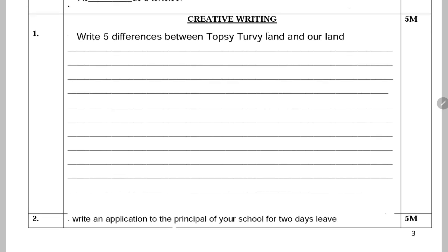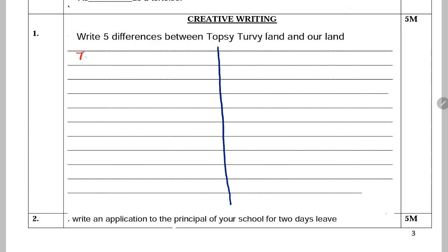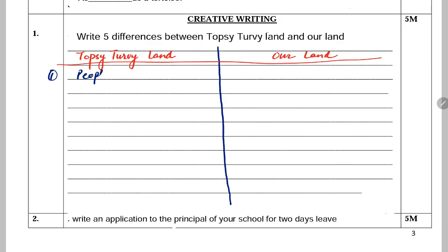Next: Creative writing — write five differences between topsy-turvy land and our land. Topsy-turvy land mein aur humari land mein kya differences hain? Number one: In topsy-turvy land, people walk on their heads. Jabki humari land mein, people walk on their feet. Number two: In topsy-turvy land, buses run on the sea; in our land, the buses run on land.